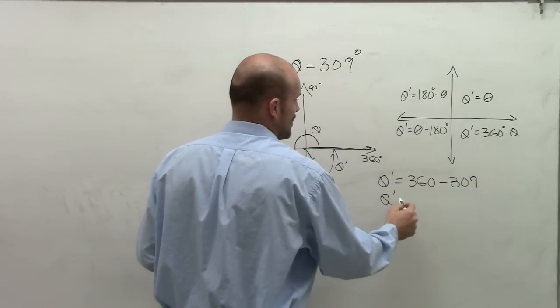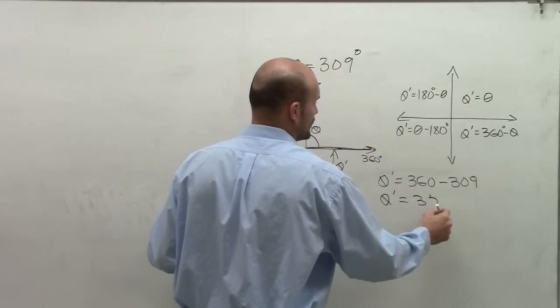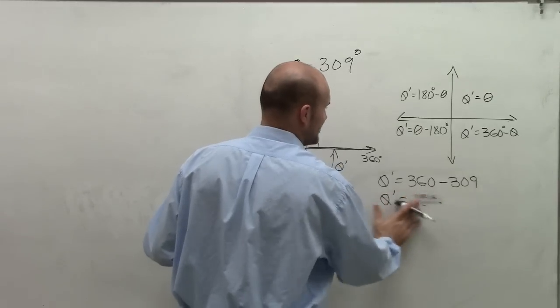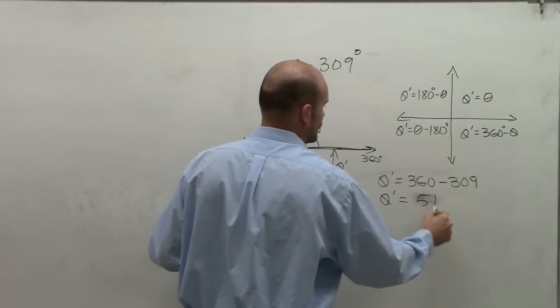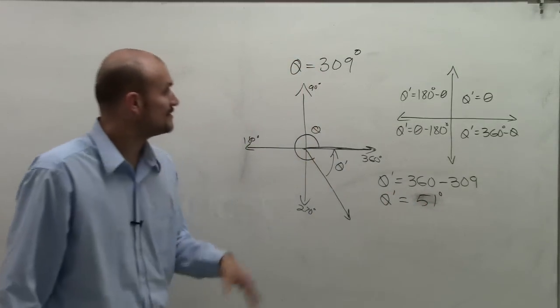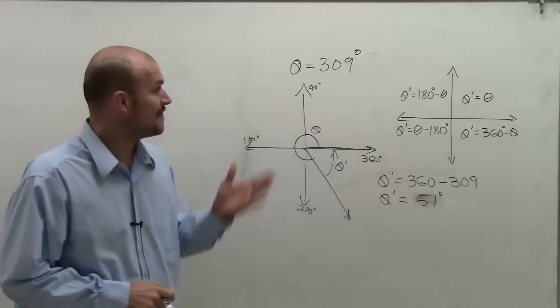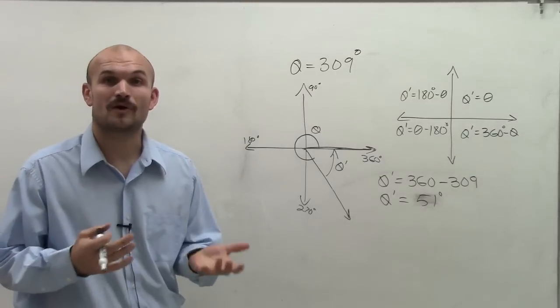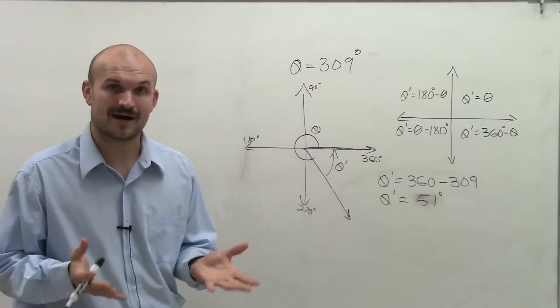Therefore, by doing my math, theta prime is going to equal 300... I'm sorry, not 300, is going to equal 51 degrees. So there you go, ladies and gentlemen. That's how you find the reference angle for an angle in degrees in the fourth quadrant. Thanks.